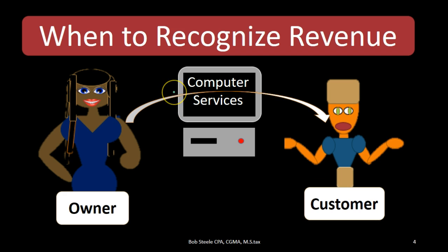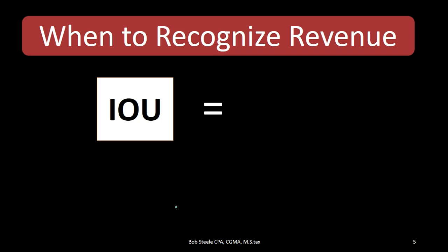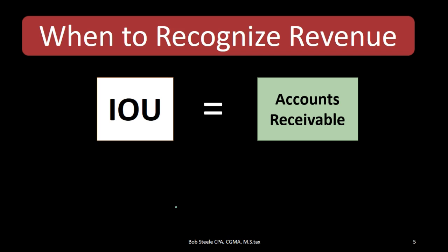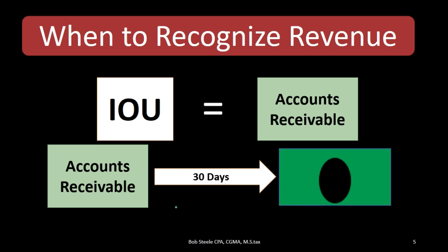For example, we could think of a situation where we did the computer service and the customer didn't pay us — we billed the customer. At that point in time, the customer has given us basically an IOU. We earned the money when we did the work, sent out a bill, and the customer is going to pay us in the future. That IOU goes on the books as accounts receivable, which represents the money owed to us. We're telling readers of our financial statements that we have an asset — an IOU — and we expect to get that cash within something like 30 days. We recognize revenue when we got the IOU, not when we receive the cash, because that's the time period we did the work.